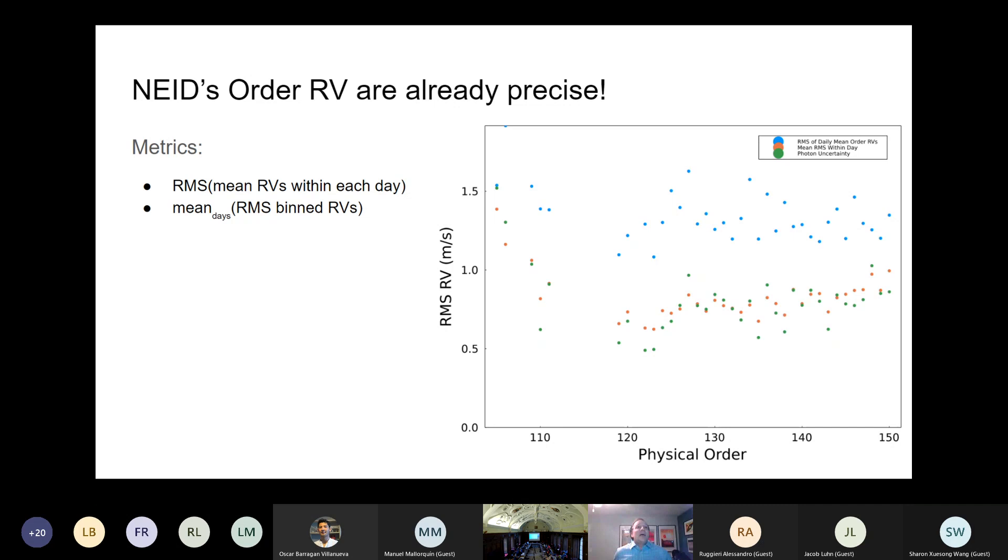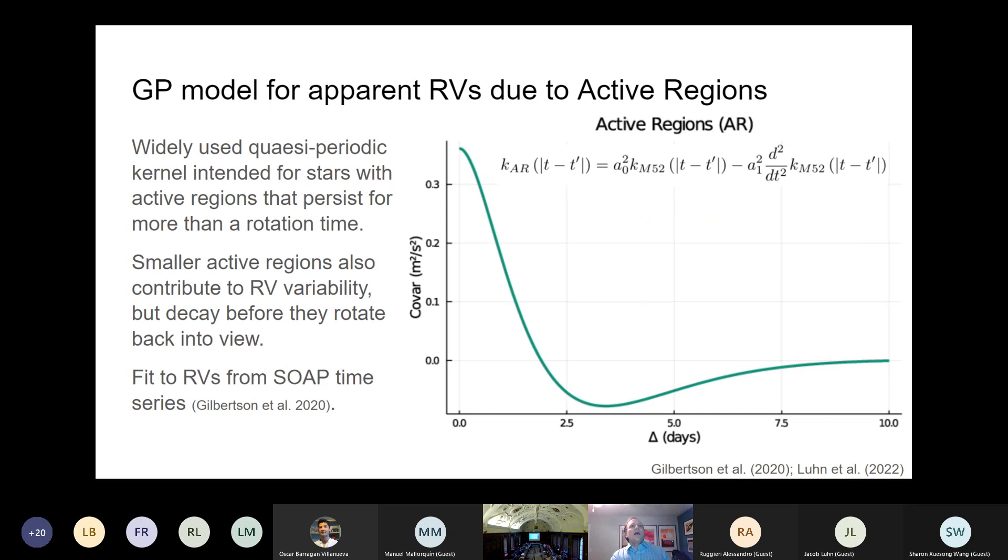So the first thing I'll mention, and hopefully I'll have time to come back to, is that the NEID order RVs are already quite precise. So if you look at the five-minute binned ones, you're getting within a day the RMS is 60, 70 centimeters per second from a single order. And so what that means is we have a lot of power to combine orders or use more restrictive line lists to see if we can mitigate stellar activity, being very careful in what we include. And so that's something that we're working on, particularly with Alex Wise. We posted a paper recently from him and Peter Plavchan on the Slack as well discussing some of those choices.